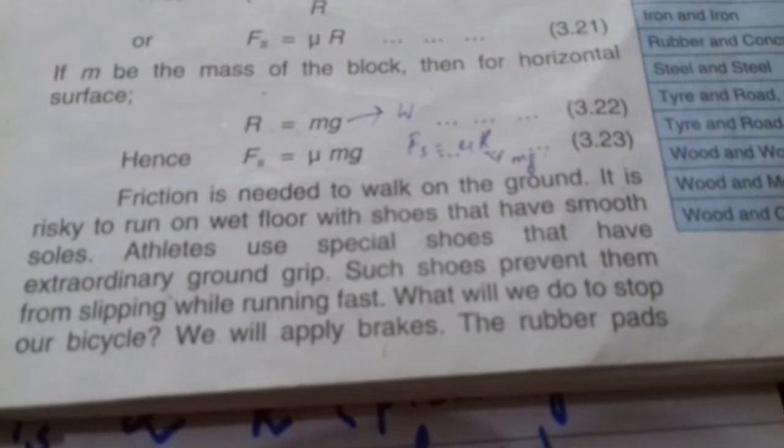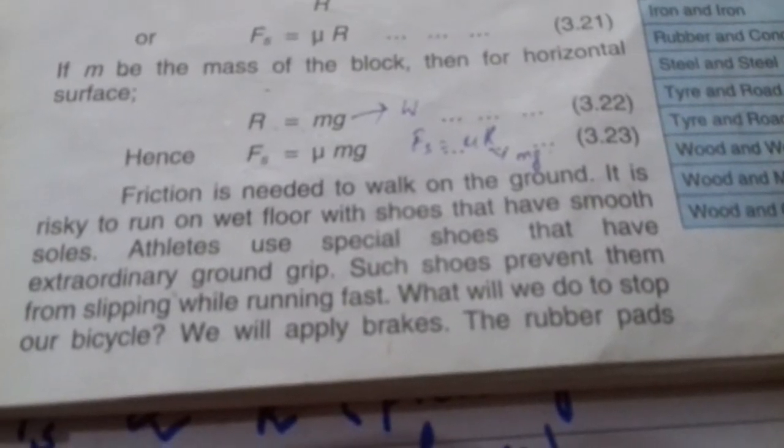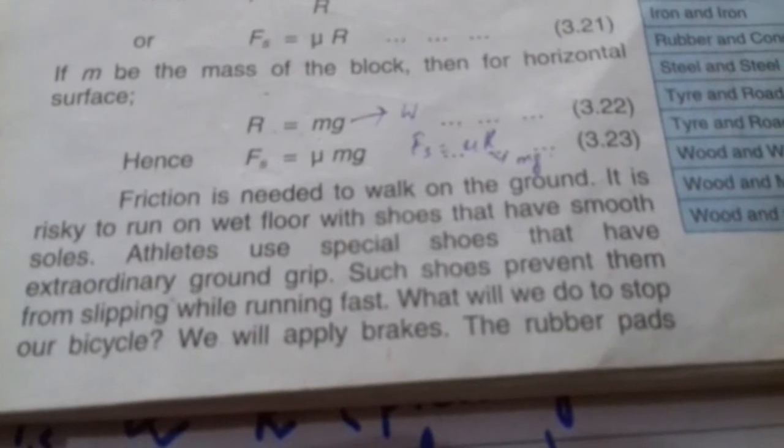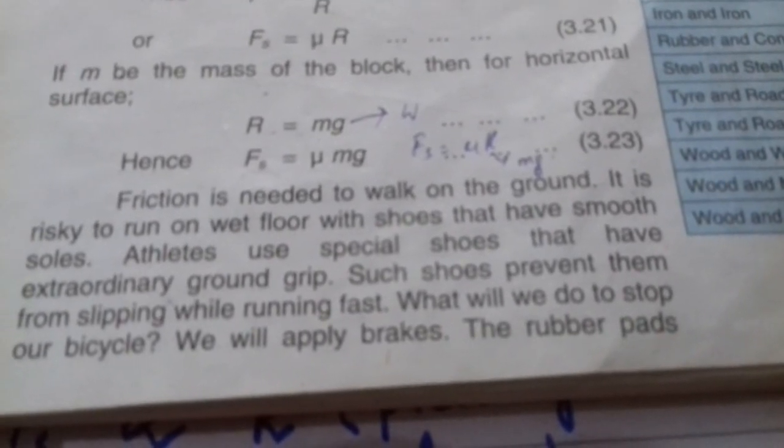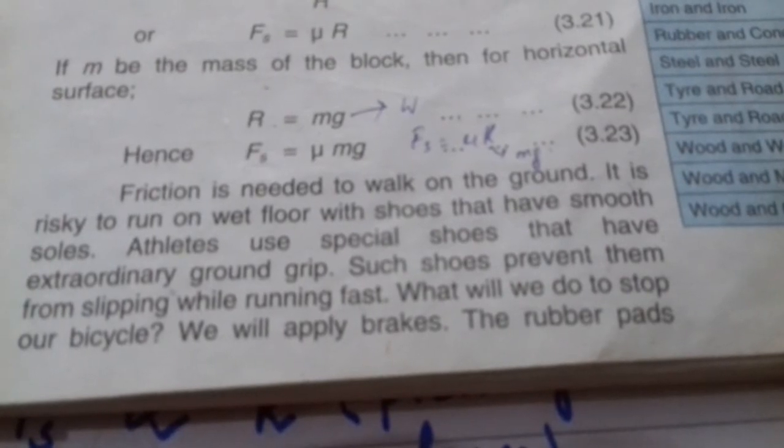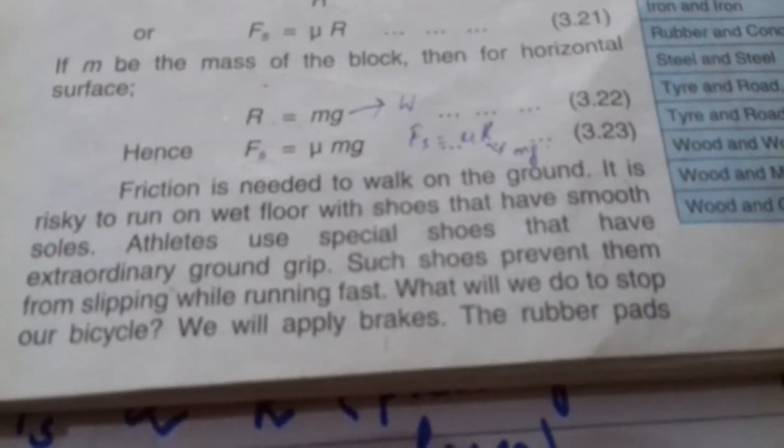It's risky to run on a wet floor with smooth-soled shoes because they offer less friction and you slip. Athletes use special shoes with extraordinary ground grip that prevent them from slipping while running fast.